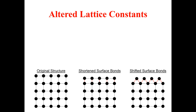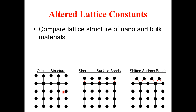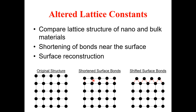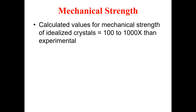Regarding altered lattice parameters, comparing the lattice structures of nano and bulk materials, we find shortening of bonds near the surface. This is the first observable factor. Afterwards, we find surface reconstruction, which is the key thing we observe when proceeding toward nanostructure and nanomaterial formation.